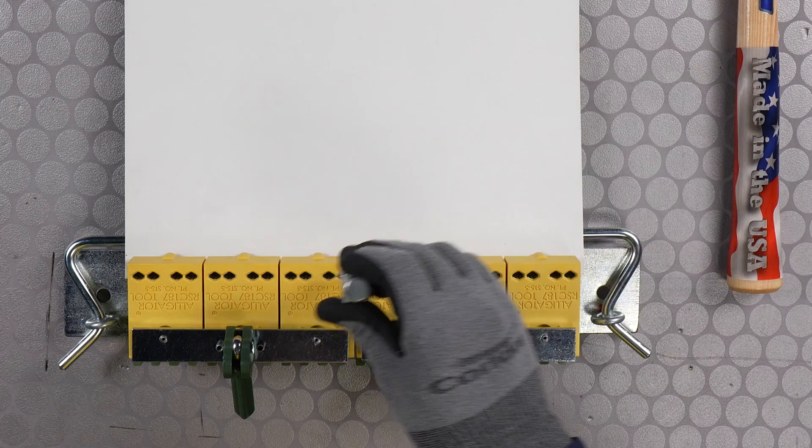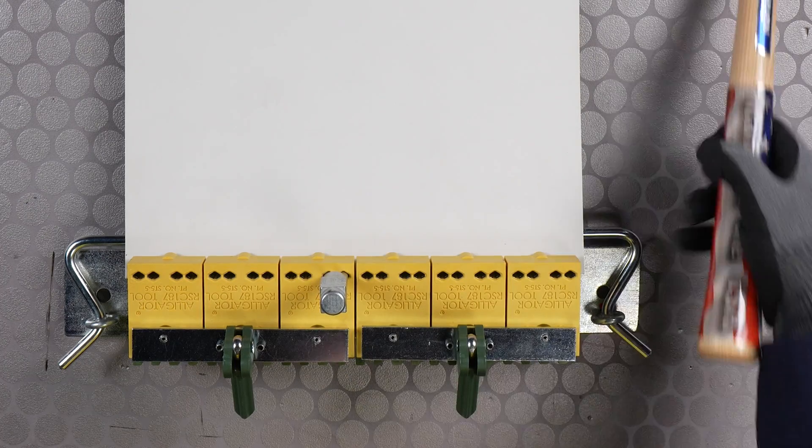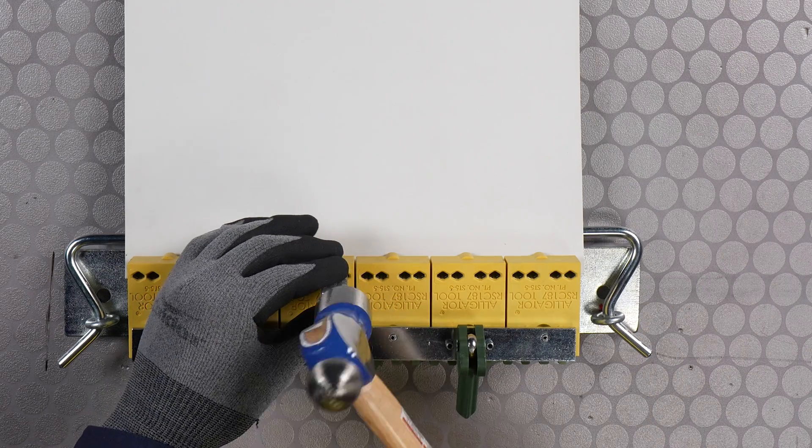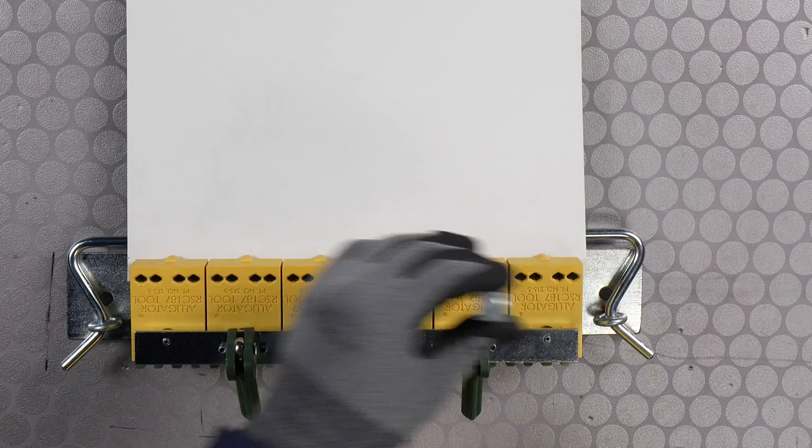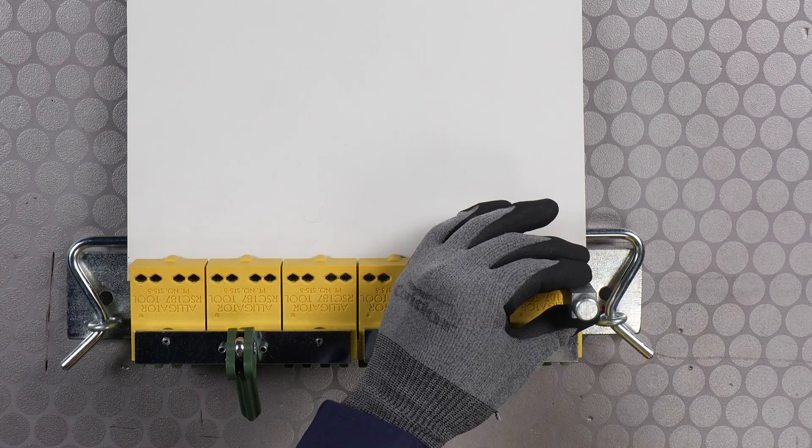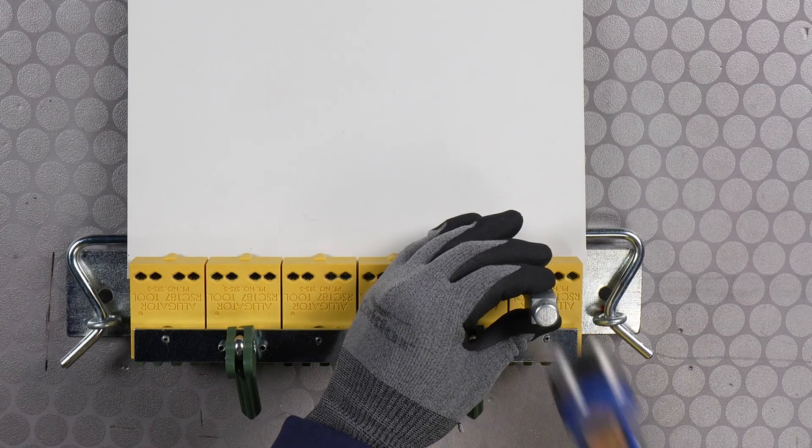Position the staple driver in the applicator tool. Starting with the center fastener plates, strike the staple driver using a one-pound hammer. Follow the sequence shown in the IOM to drive the remaining fasteners.